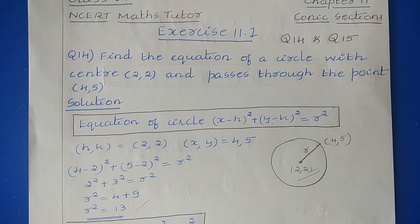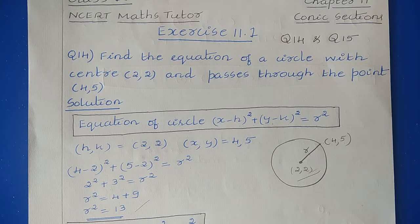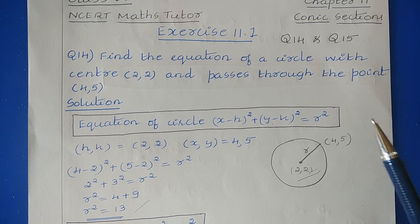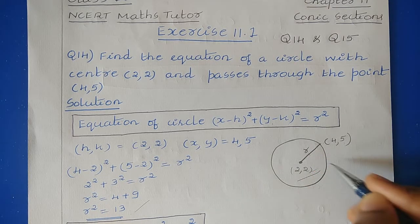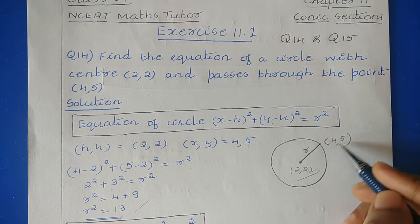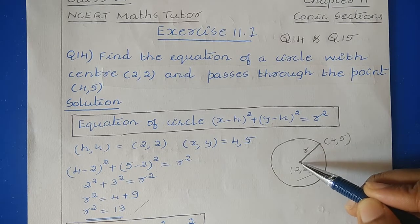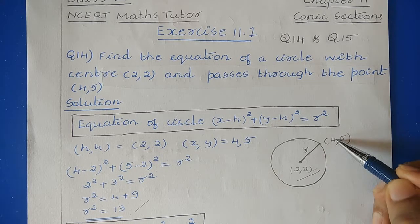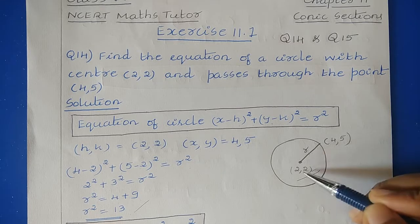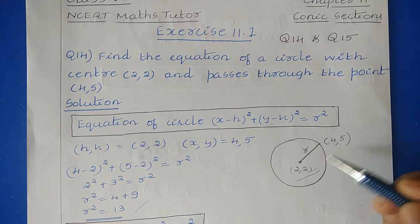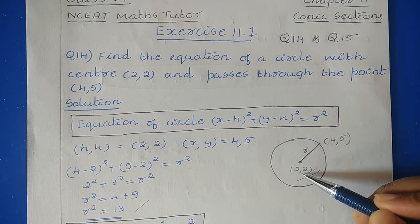Welcome to the channel. NCERT Maths Tutor, Exercise 11.1, Question 14: Find the equation of the circle with center (2,2) and passes through the point (4,5). Here they have given two values — the center as well as the passing through point. The distance between the center and the point is nothing but the radius, so to find the radius you can use the distance formula or directly substitute into the general equation of the circle.